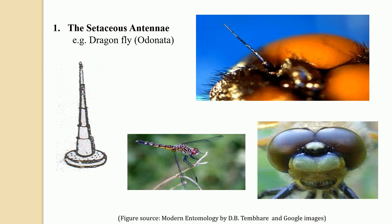The antennae are a crucial part of the head of an insect and a well-known sensory organ with different kinds of forms. These antennae are classified into different types, and there are about 13 different types of antennae that can be recognized.